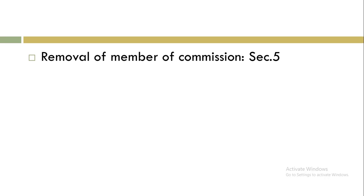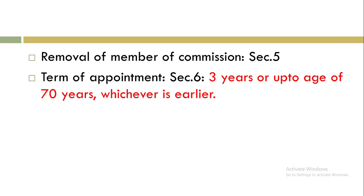The procedure for removal of members of the Commission is mentioned in Section 5. Regarding the term of appointment, Section 6 states that members are appointed for 3 years or up to the age of 70 years, whichever is earlier. Previously the term was 5 years, but it was amended in 2006 to 3 years.